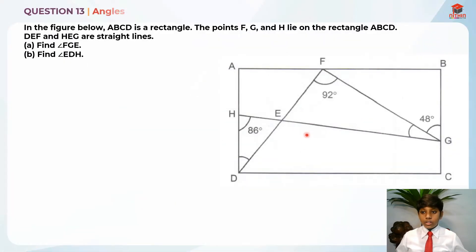This is question 13 and this question is also testing us on angles. So let's read question for part A first. In the figure below, ABCD is a rectangle. So this is A, B, C and D. The points F, G and H lie on the rectangle ABCD.